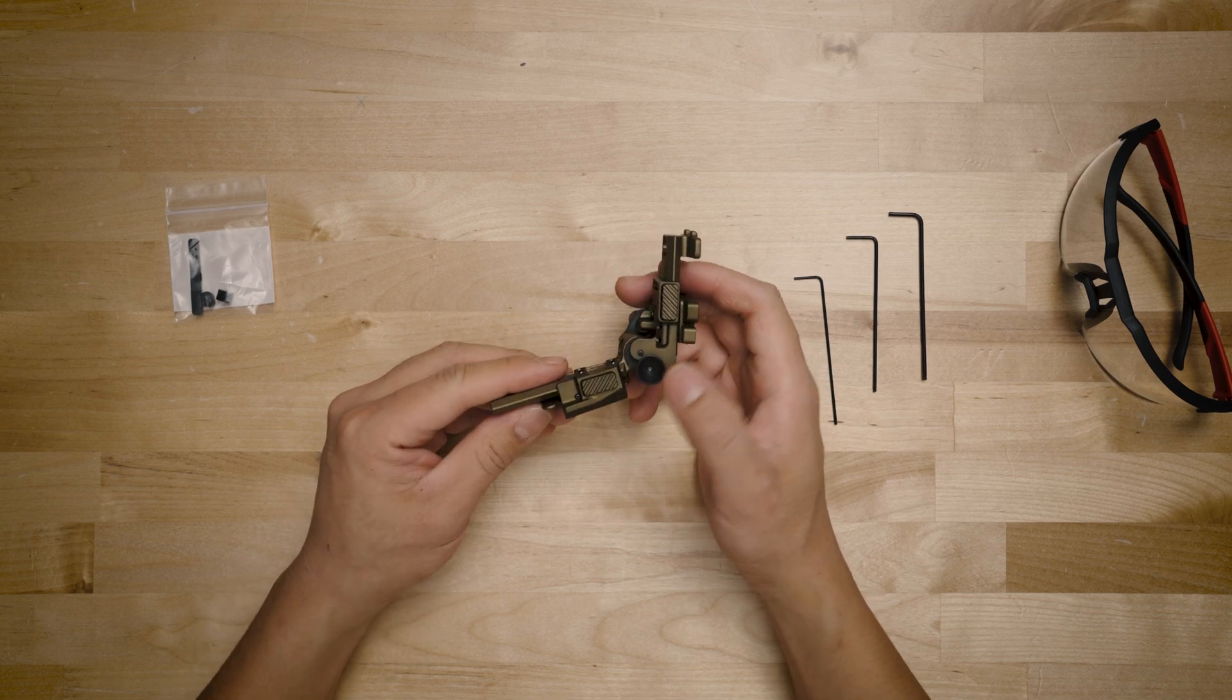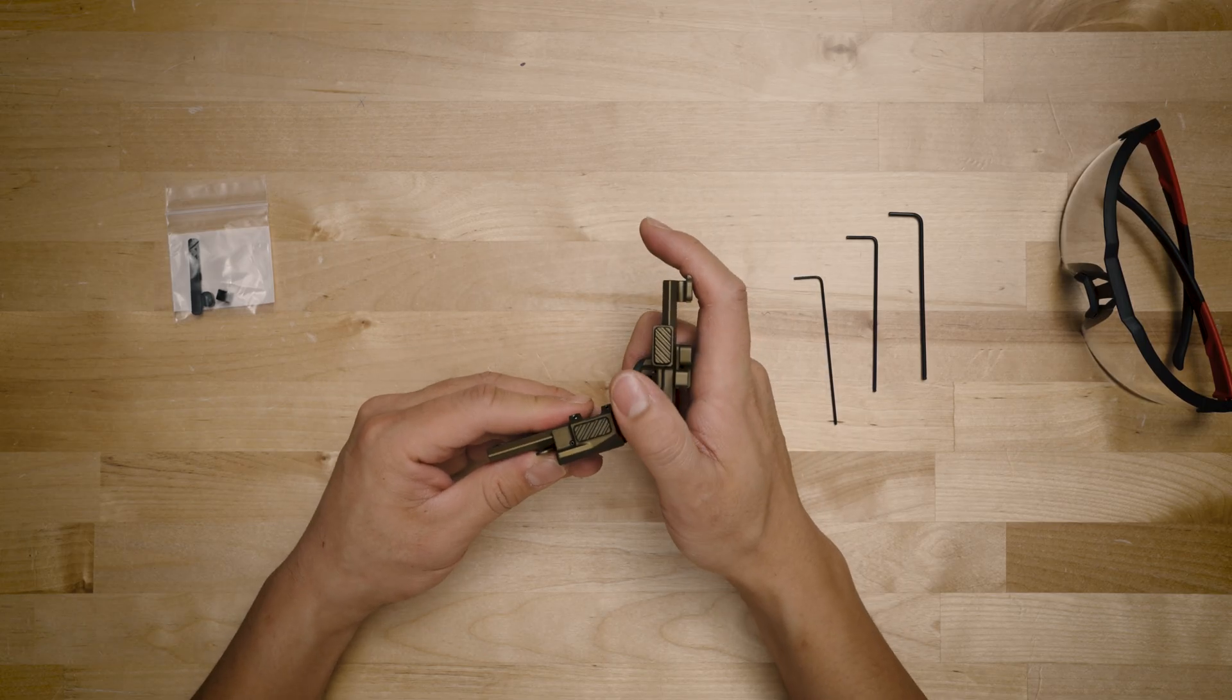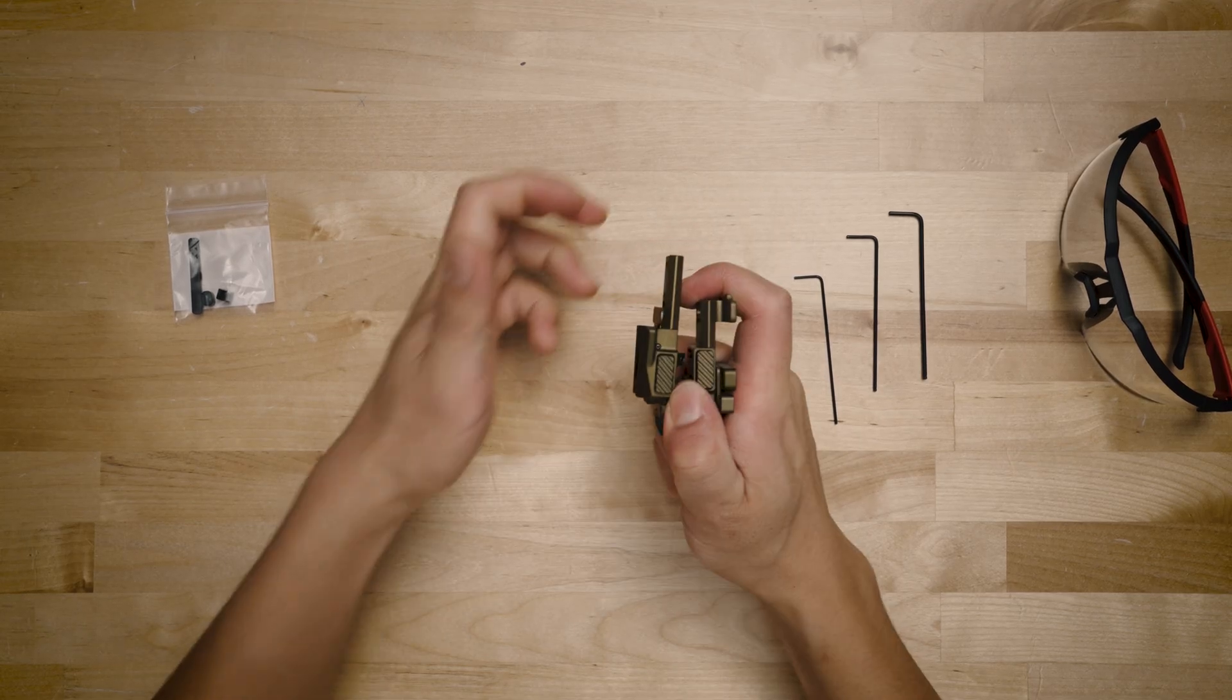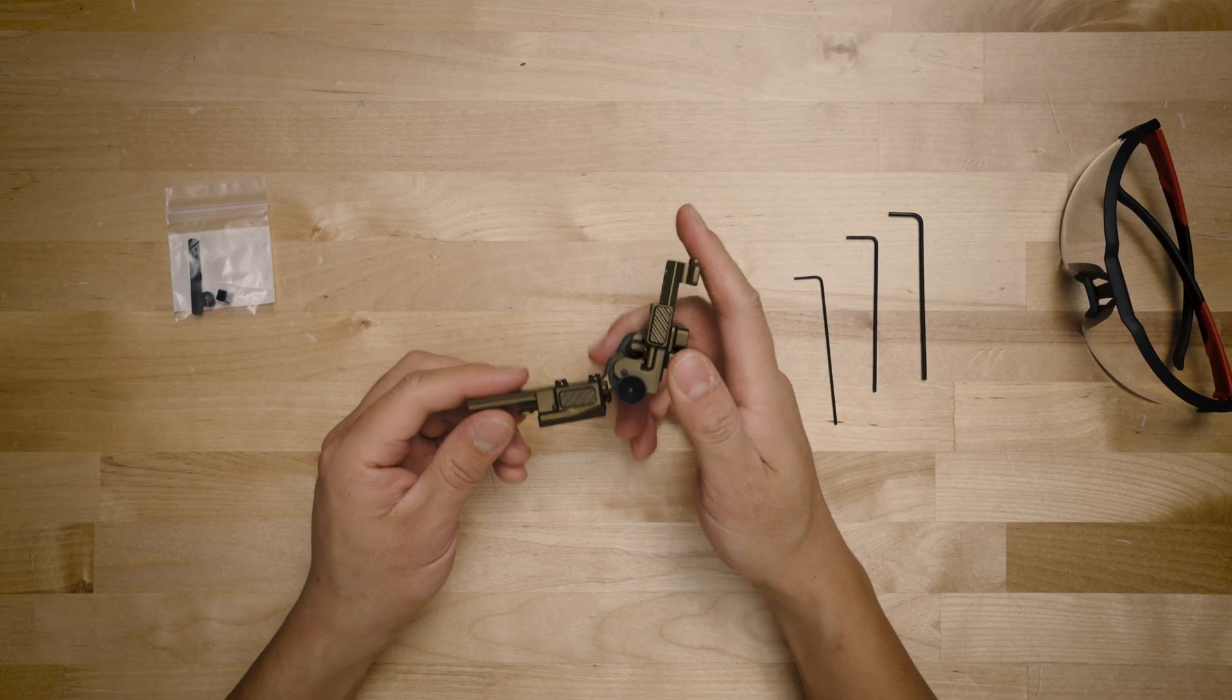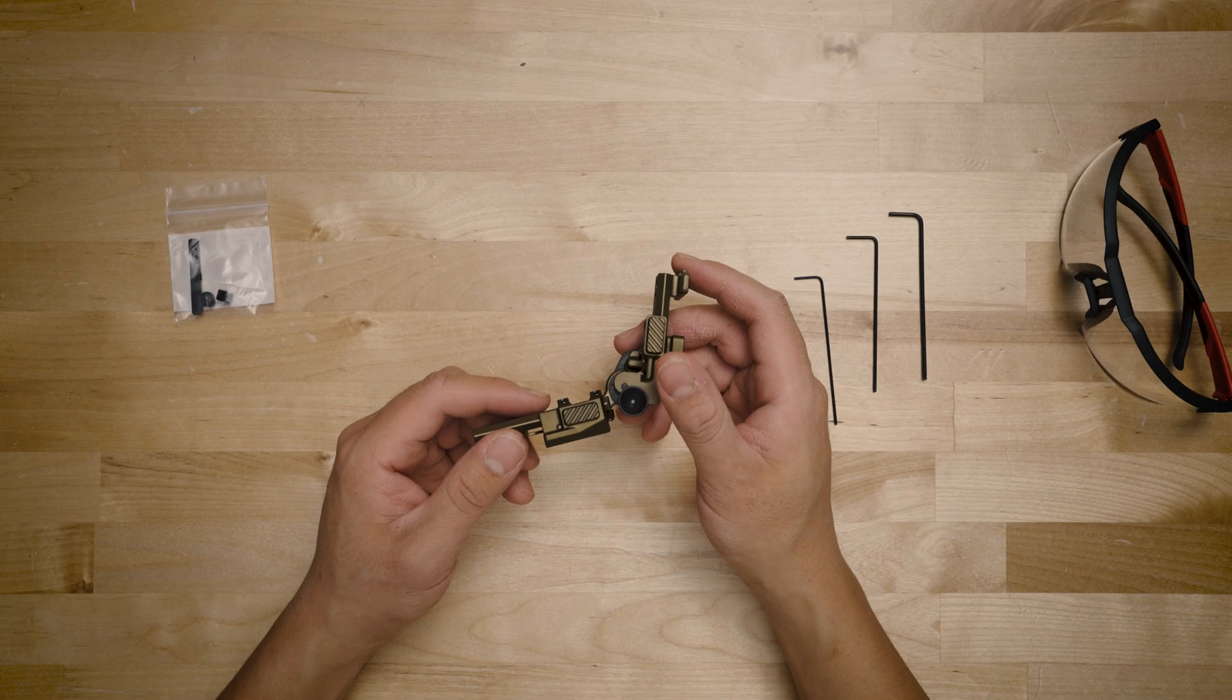So another function that this mount has is you can actually remove this button and then convert it to a forced to overcome mount. If I were to simulate that now, you basically hold this down, and now this mount is basically a friction and tension mount only, which can be useful depending on what kind of scenarios you're using your NVGs in.